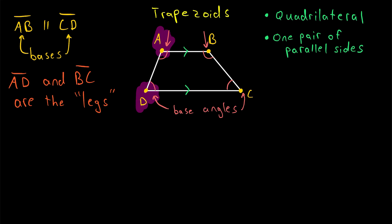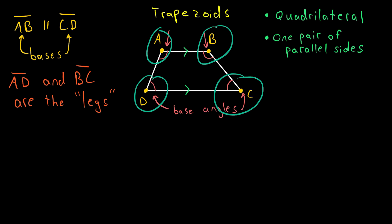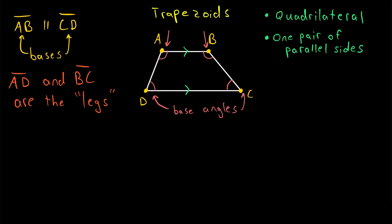We would not say that angle A and angle D are a pair of base angles because they're not adjacent to the same base. Angle A is adjacent to base AB, whereas angle D is adjacent to base DC. In general, in a trapezoid, none of the angles or sides are necessarily congruent to each other. In some special types of trapezoids, some angles or sides may be congruent, but if we just know a shape is a trapezoid, we can't conclude that any of the angles or sides are congruent.